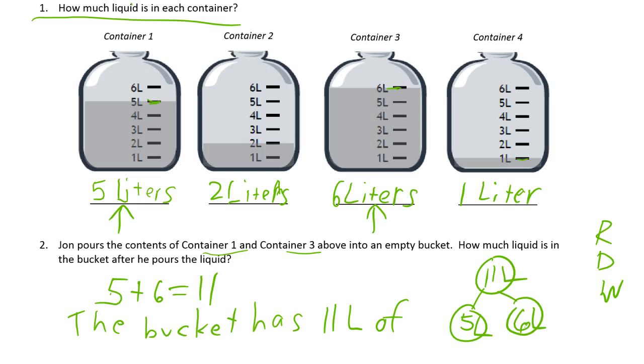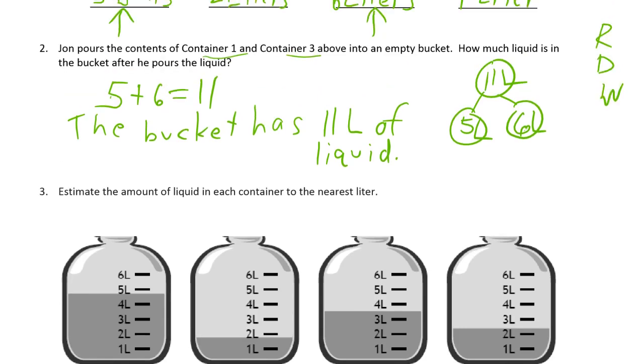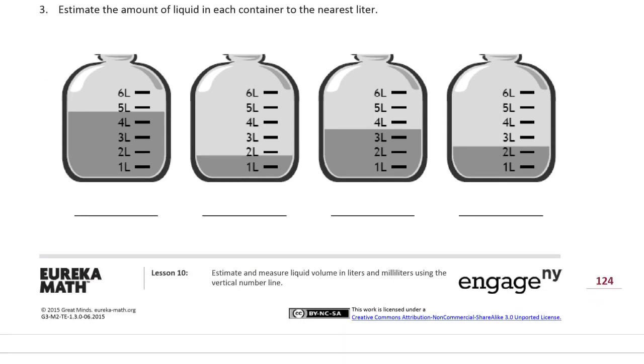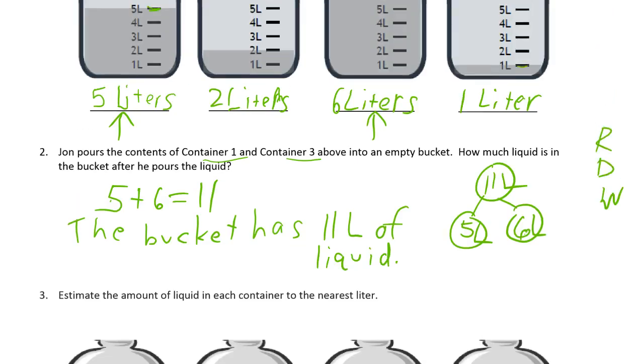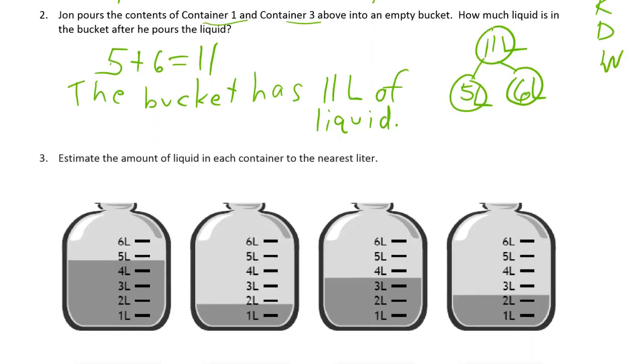It doesn't say whether it's water or apple juice or anything else, just liquid, so 11 liters of liquid. Number three: estimate the amount of liquid in each container to the nearest liter. The ones at the top were right on the lines, so you could just look at them and see what they were.